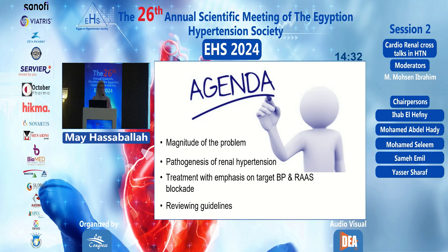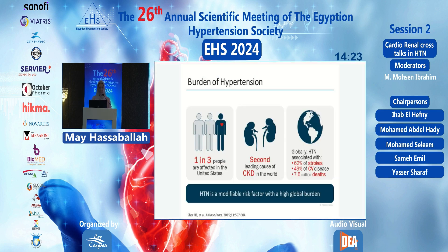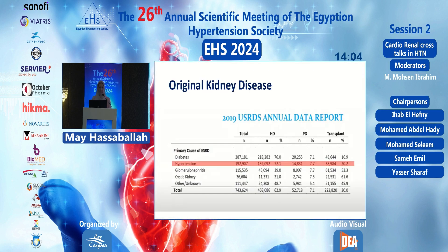While reviewing the guidelines, you all know that hypertension affects one in three people in the United States, even two in three in Africa. It is the second leading cause of CKD in the world and is associated with 62% of strokes, 49% of cardiovascular disease, and 7.5 million deaths.